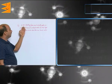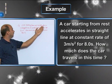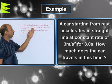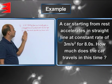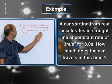Now, see this example. A car starting from rest accelerates in a straight line at constant rate of 3 meters per second squared for 8 seconds. How much does the car travel in this time?